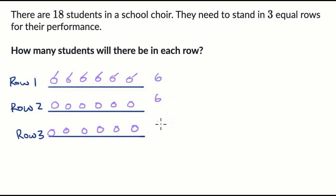There's six here, six here, and six here. And that makes sense because if I add six plus six plus six, I get to 18. If I say six times three, that's 18. Or if I say I have 18 students and I want to divide them into three equal rows, that is going to be equal to six.